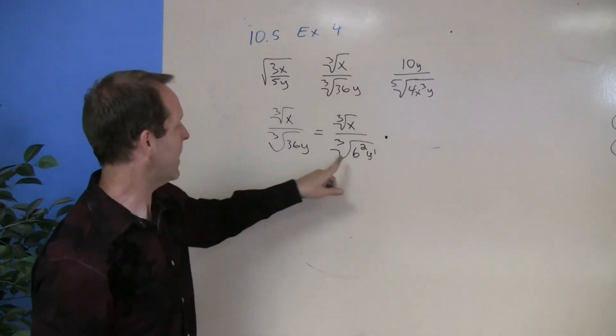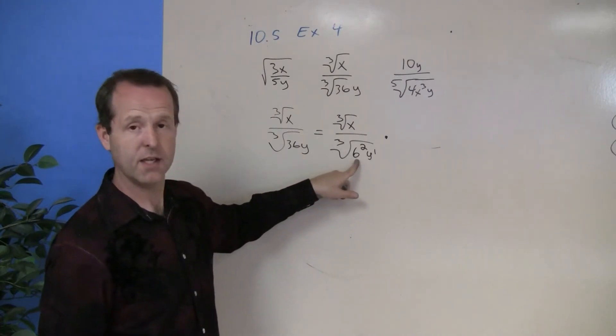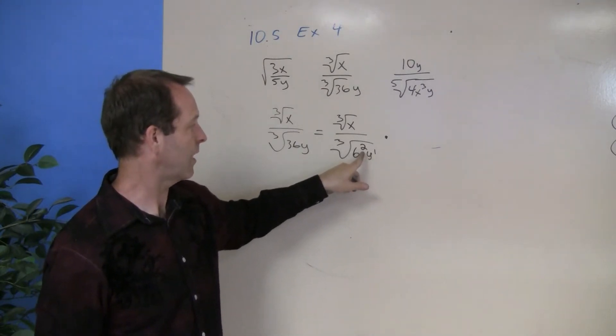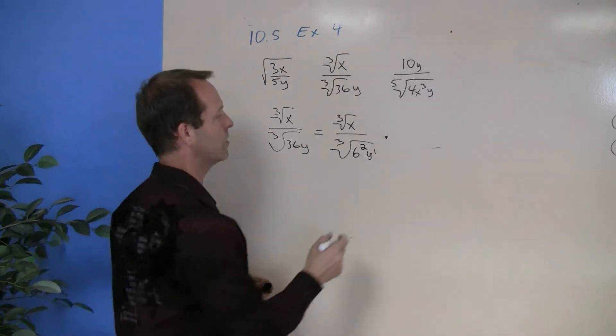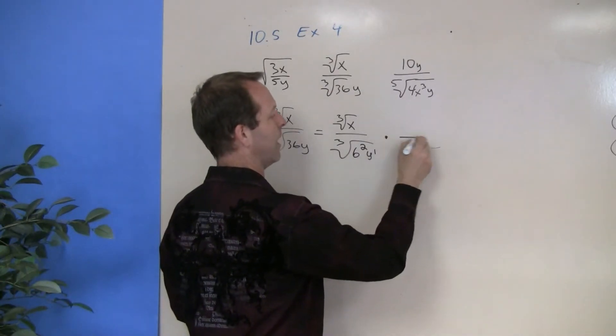Well, in order to make all these things a perfect cube, I need to have a degree 3 exponent on all those terms. So that's going to help me decide what I'm going to multiply by.